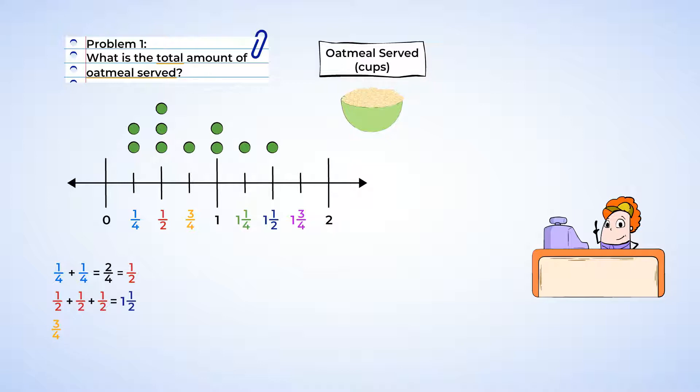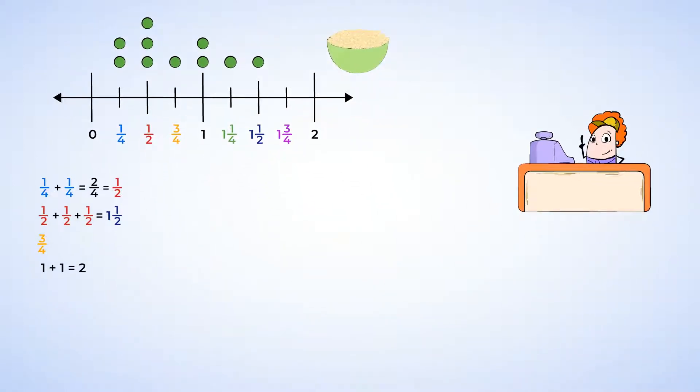There are two one-cup servings for a total of two cups, and there is one serving of one and one-fourth and one serving of one and a half. Let's see what fractions have the same denominator, because we can add those ones first.